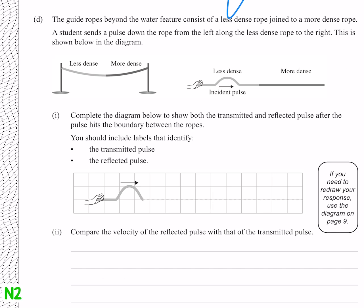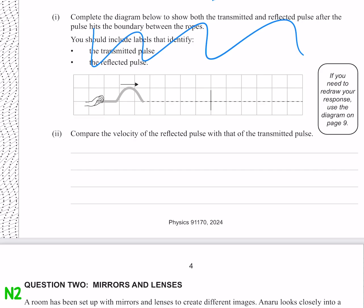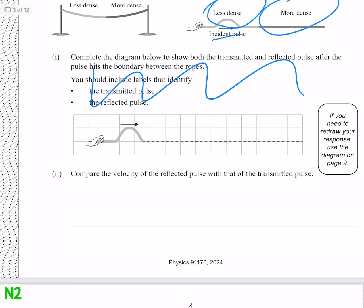In this question looks like we have a pulse from a less dense rope going into a more dense rope. Compare the velocity of the reflected pulse with that of the transmitted pulse. Well the reflected pulse is going to be in the less dense area and the transmitted pulse is going to be in the more dense, which means that the reflected pulse is going to be faster.